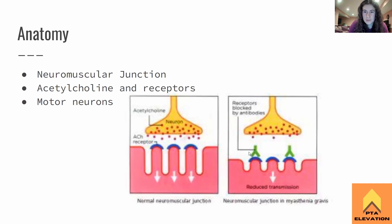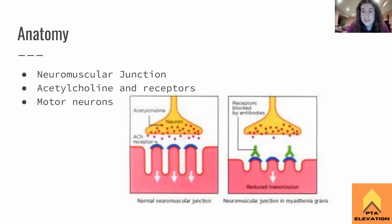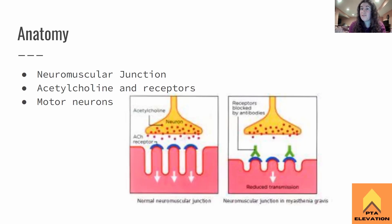As you can see here, on the left we have a normal neuron. The acetylcholine is traveling across and there's an acetylcholine receptor that's going to receive it. The acetylcholine neurotransmitter locks into the receptor and it signals the muscle to contract. If the neurotransmitters are not crossing the neuromuscular junction and adhering to those acetylcholine receptors — if acetylcholine is not binding to the receptor — then there's no muscle contraction and we see flaccidity.